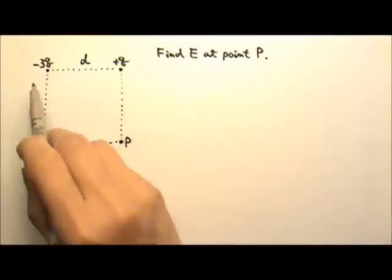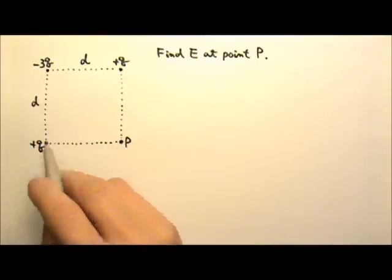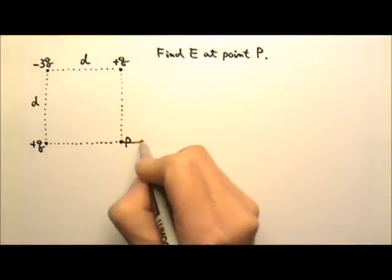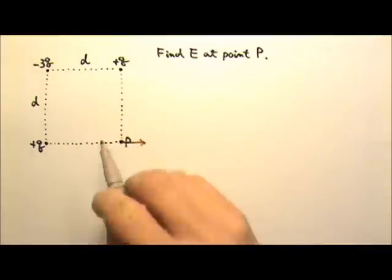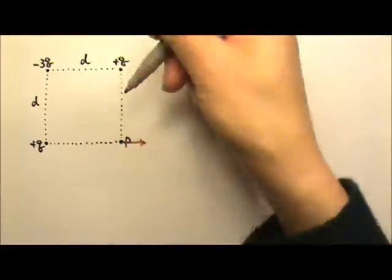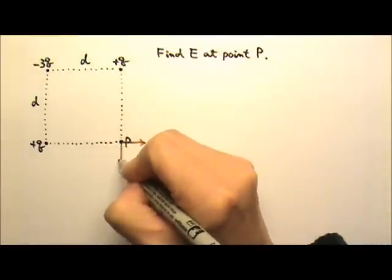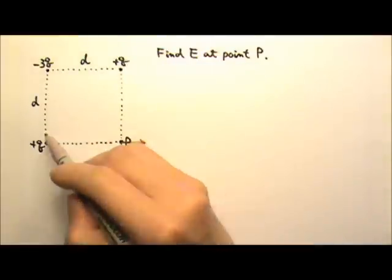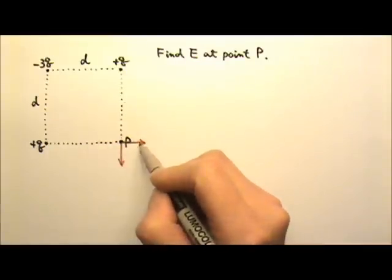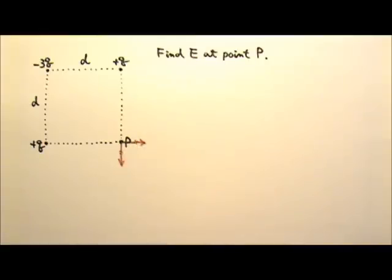There are three charges producing fields here. The field produced by the positive Q goes out of the positive Q at point P, that way. The field produced by that positive Q goes out, down this way. Because these two charges are equal amount and equal distance away, the two fields should be equal magnitude.